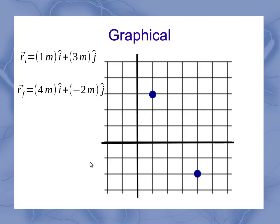My change in position is moving from my initial position to my final position, and that's a vector which is moving 3 to the right and 5 down, just like I found when I looked at it purely from the equation point of view.